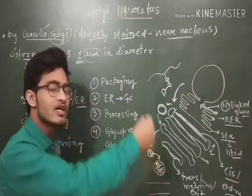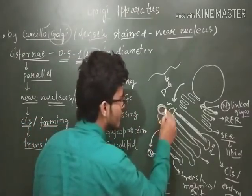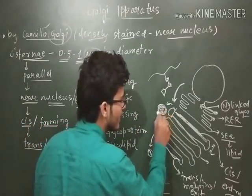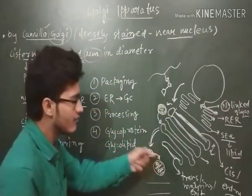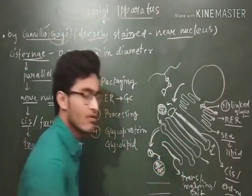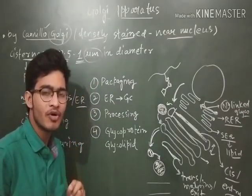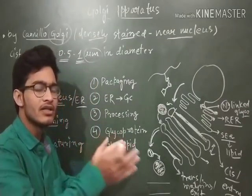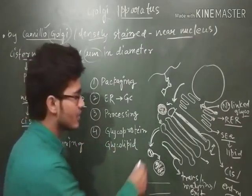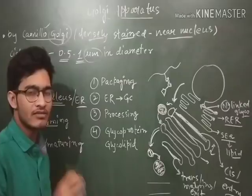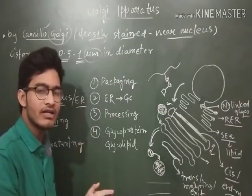The vesicles will be generated and sent to different kinds of cisternae. After passing through them, they come to the final cisternae, which is the exit point. From the exit point they will be diverted to different kinds of places where they are required. For example, the protein can go to the plasma membrane, the protein can go to the lysosome, or to any other place.